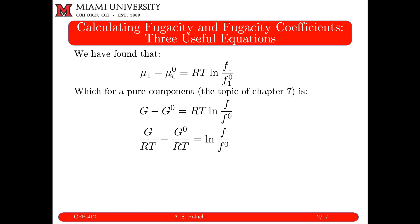Our two standard state values can't be chosen independently. Once you define your reference state — say, a pure component system at one bar — you pin down both the mu-naught and F-naught conditions, since they correspond to the same state. Just like mu1 and F1 correspond to the same state, once I choose one, the other is fixed.